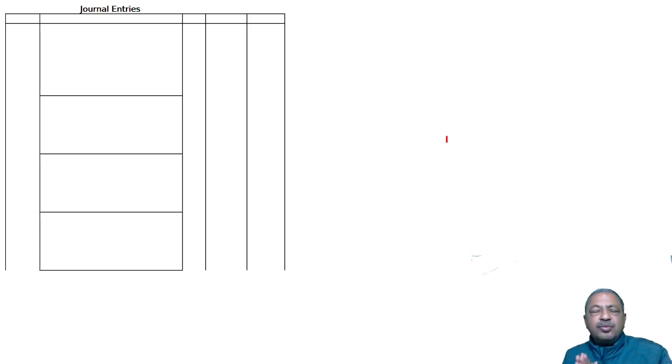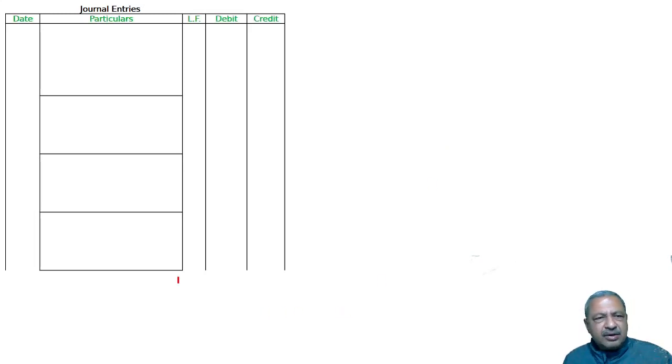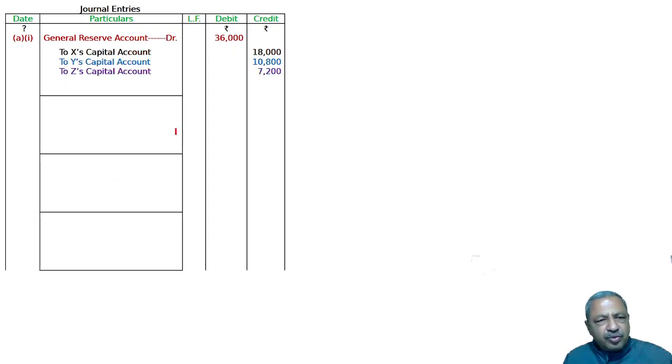Following is the extract of the balance sheet on the date of admission. In the balance sheet, we have accumulated profits and reserves on one side, and accumulated loss on the asset side. The deferred advertisement expenses account is recorded as a journal entry. When admission involves accumulated profit, the profit will be credited to the partners.